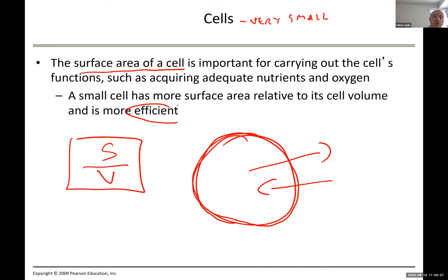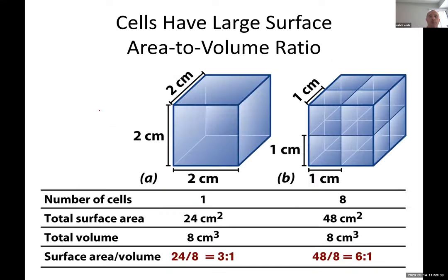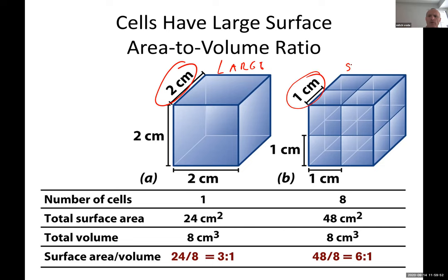Consider a large cell with a side of 2 cm and a smaller cell with a side of 1 cm — just half the size. When you look at the surface area for both of them, the total surface area of the large cell is 24 cm².